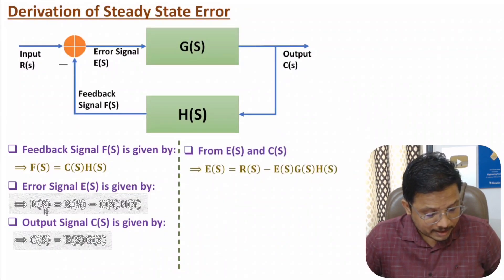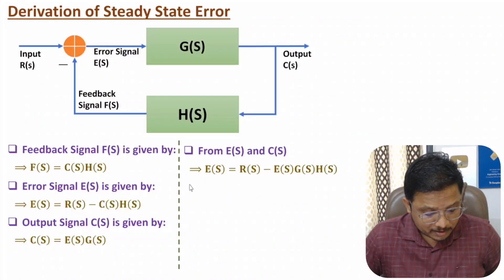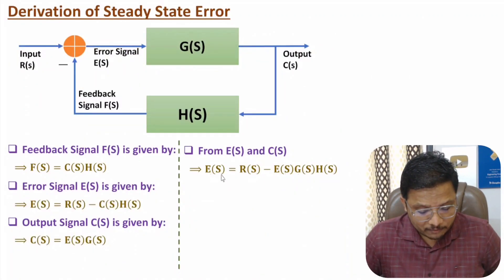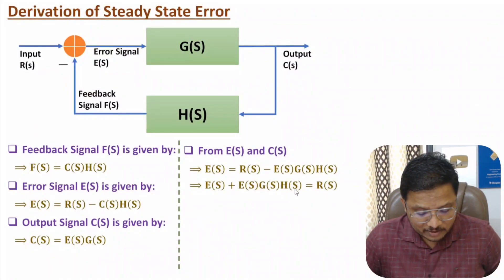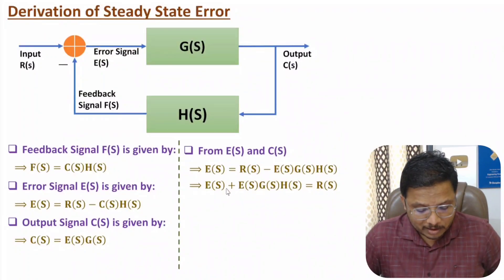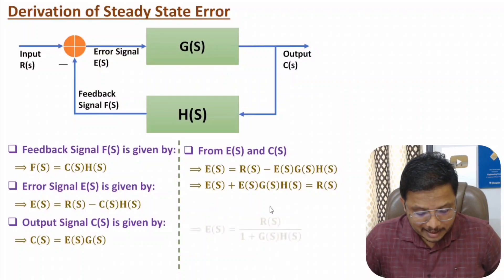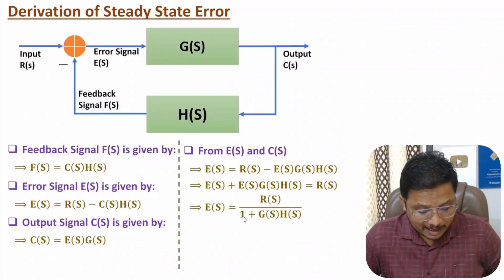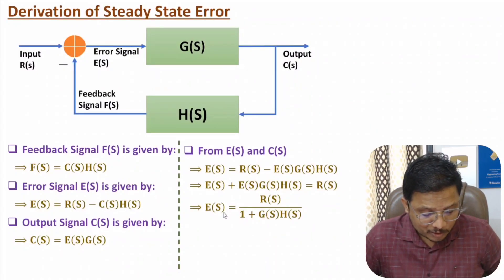Based on these two equations, one can say E(s) equals R(s) minus E(s)·G(s)·H(s). Now to isolate E(s), let us take this term to the other side. So we have E(s) plus E(s)·G(s)·H(s) equals R(s). Taking E(s) common, E(s) equals R(s) divided by 1 plus G(s)·H(s). This is the error signal in the Laplace domain.